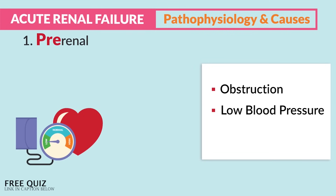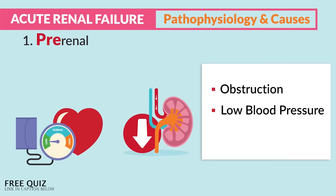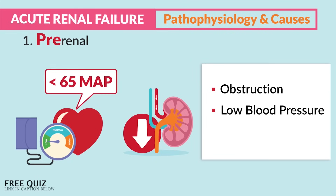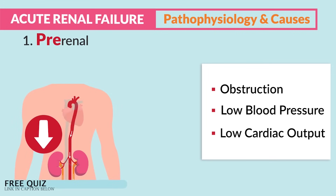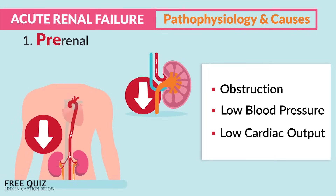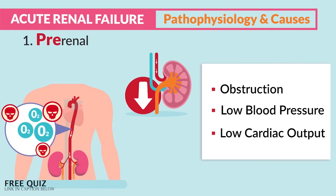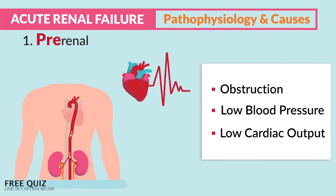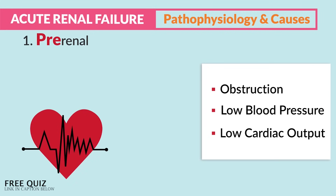Dehydration results in decreased MAP — mean arterial pressure — which is a fancy term for low blood pressure, meaning low perfusion. The key number to know is MAP less than 65. Lastly, low cardiac output gives low perfusion — think low cardiac output means low oxygen put out of the heart, resulting in low perfusion to the kidneys, typically from when the heart can't pump correctly. We see this with ECG dysrhythmias.